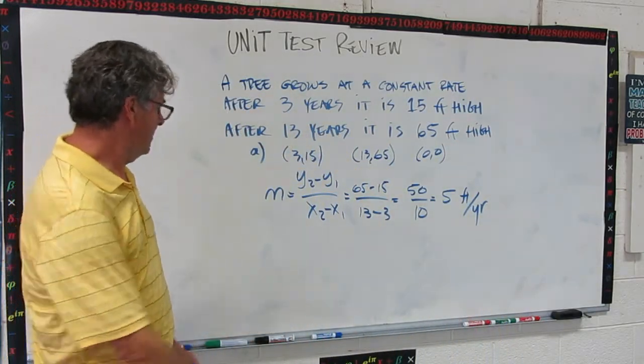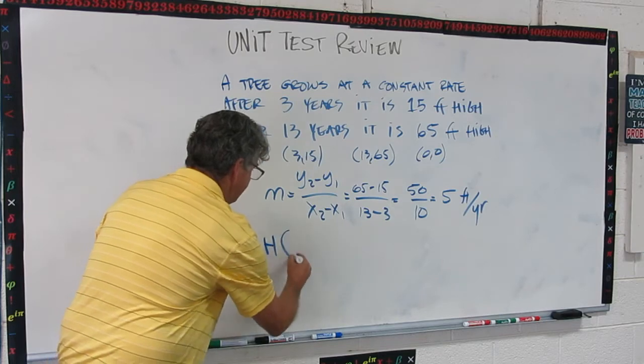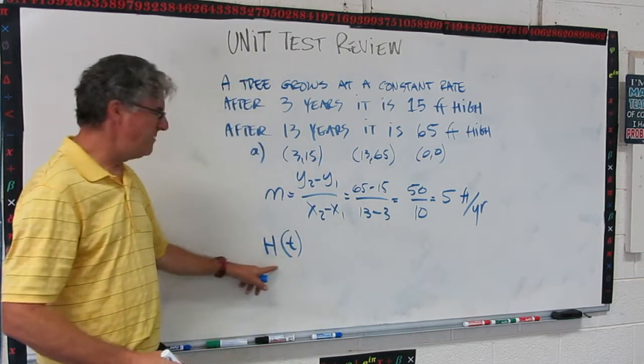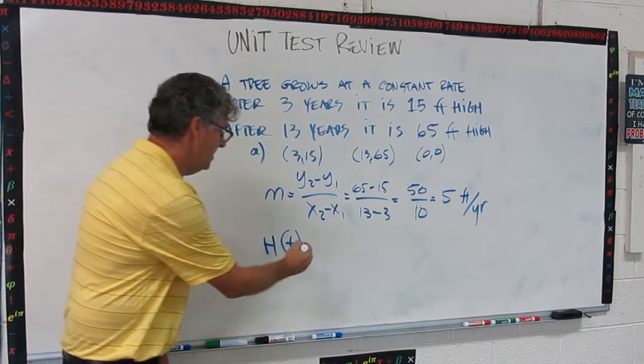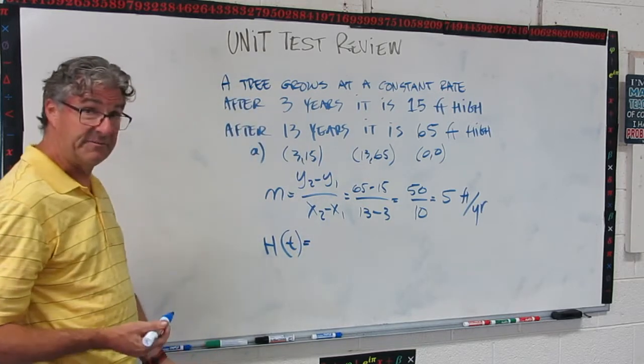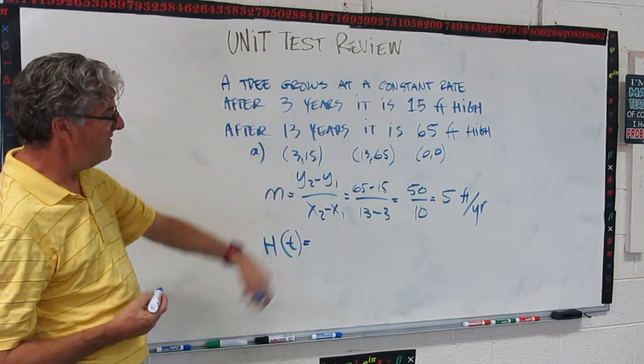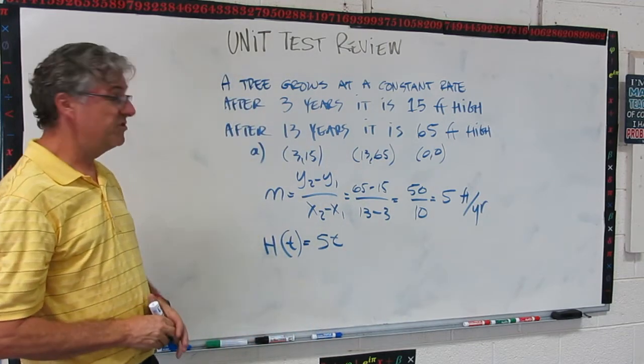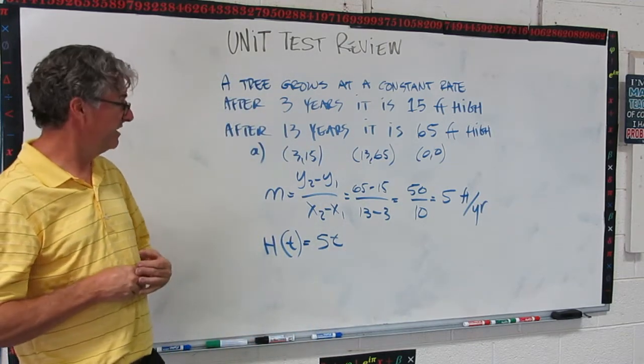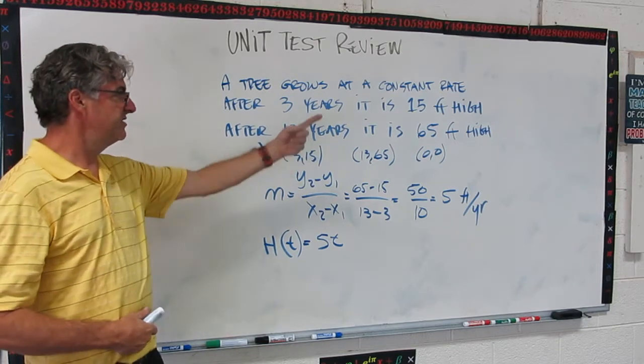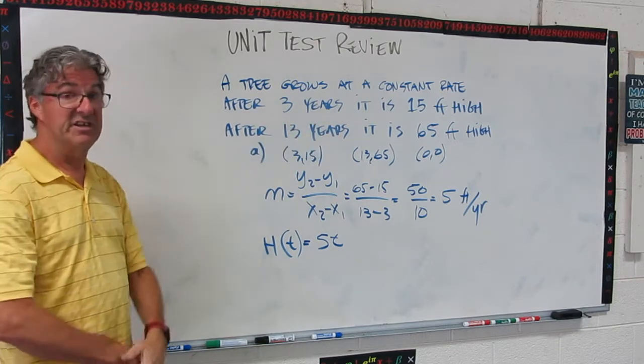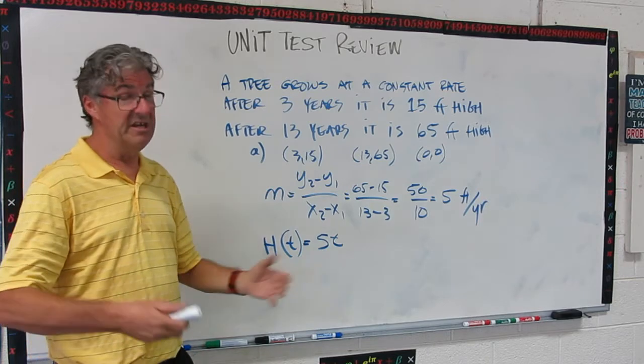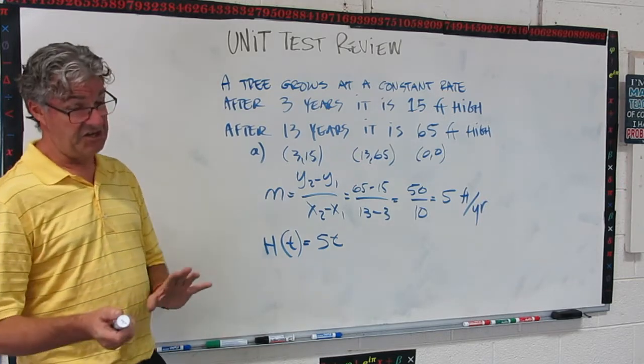I'm going to use function notation. So let's do height as a function of time. These are pretty common variables for height and time. It's going to be what? Our slope is 5, so it's going to be 5t. It's pretty simple. It just grows 5 meters per year. So after 13 years, it's 65. After 100 years, it would be potentially 500 feet high.